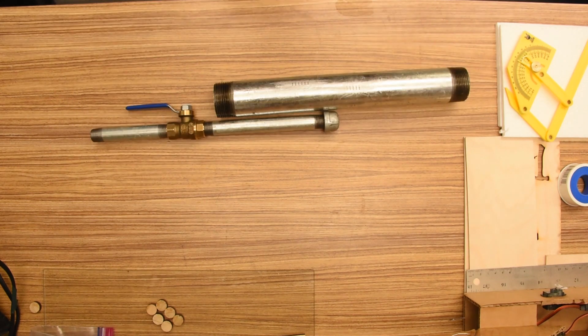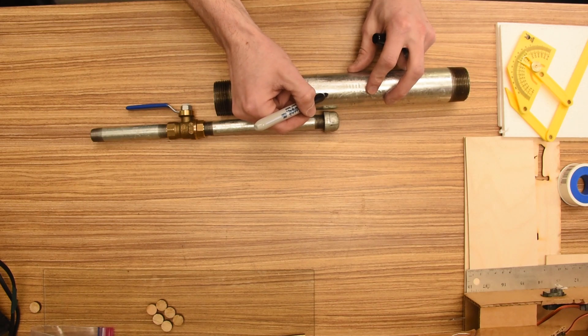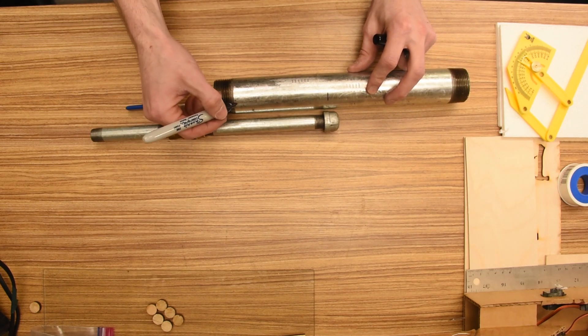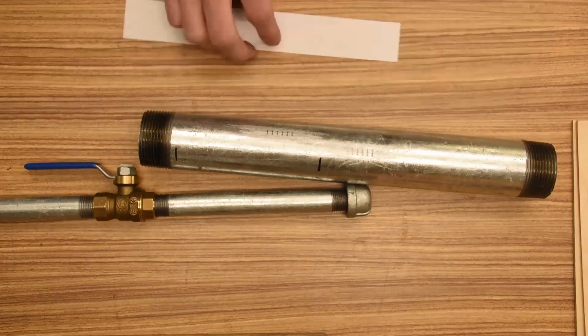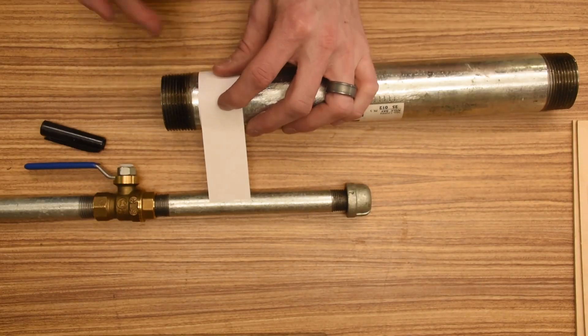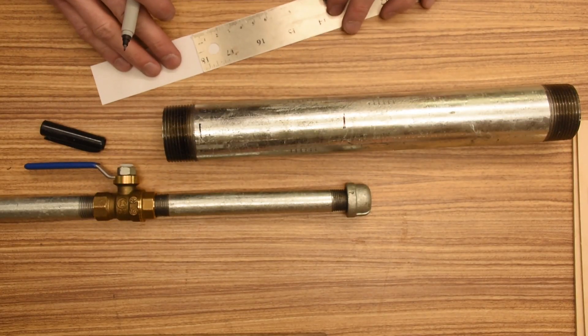I'm going to use the minimum number of set screws to keep the pipe concentric, and I'm marking where I want my screws located. I'm using a strip of paper so that I can mark the locations of the four other screw holes around the pipe.